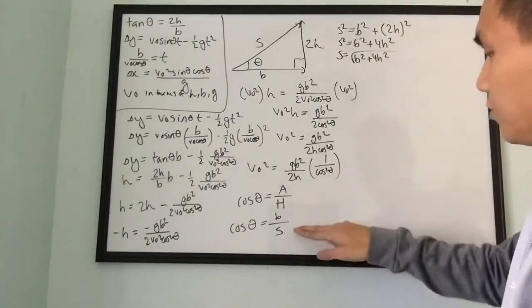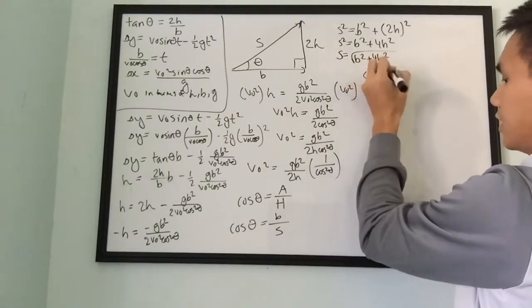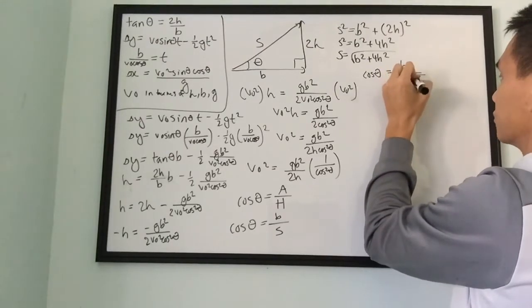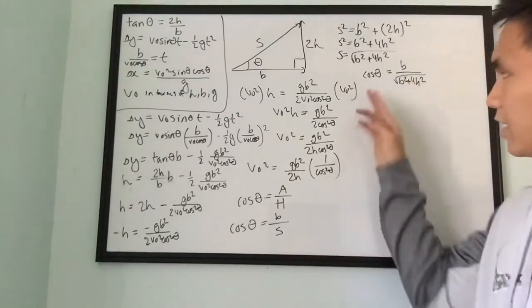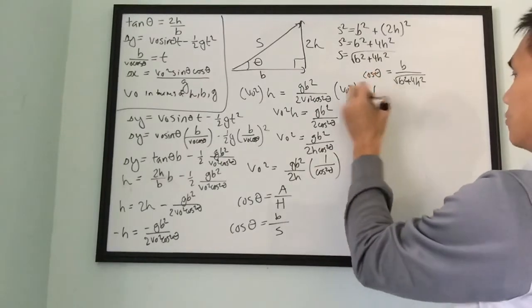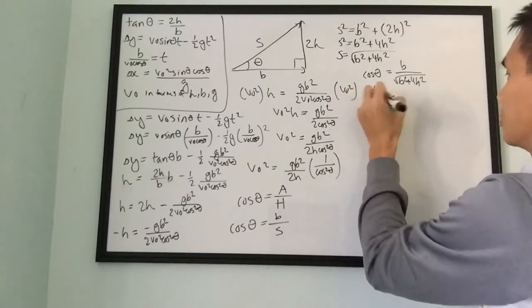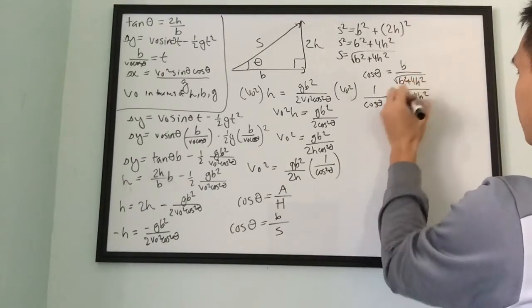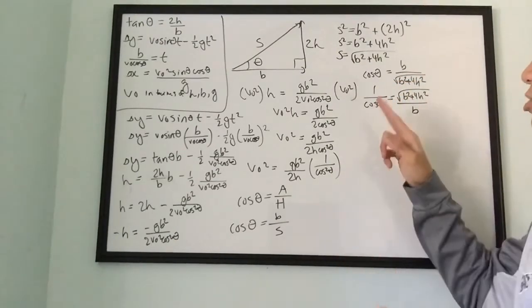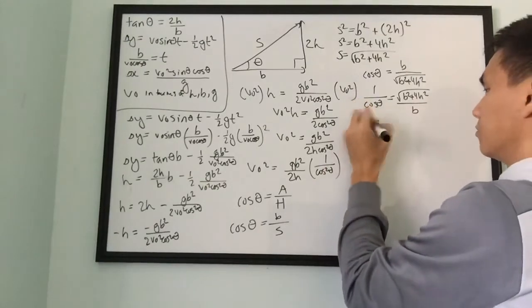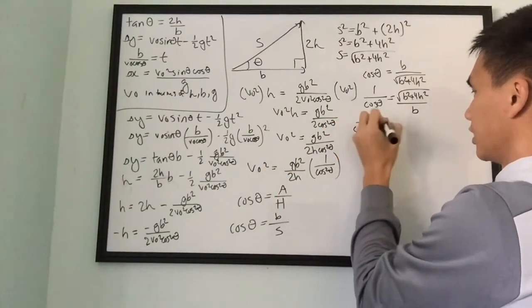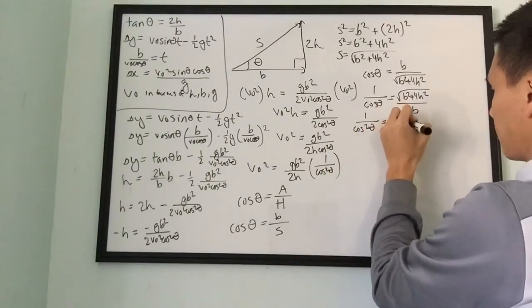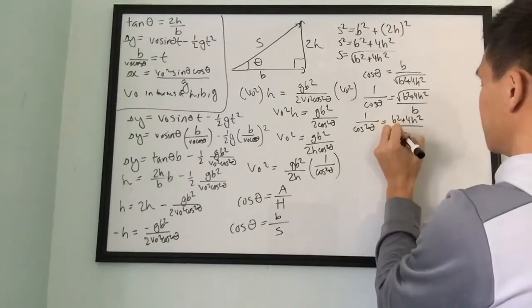Now we have s, so cosine of theta equals b over the square root of b² plus 4h². Taking the reciprocal of both sides: 1 over cosine(θ) equals square root of (b² + 4h²) over b. Squaring both sides: 1 over cosine²(θ) equals (b² + 4h²) over b² — the radical disappears and the bottom squares to b². Now we have an expression for the reciprocal of cosine²(θ).